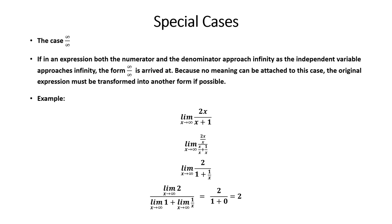Look at the example: the limit as x approaches infinity of 2x over x plus 1. So x is approaching infinity in the numerator and the denominator. So therefore, that doesn't make sense. How can we change this? Well, look at the second step. Just divide each term by x, and then that will solve the problem. Then you can see the limit of 2 is 2, limit of 1 is 1, and the limit of 1 over x is 0.